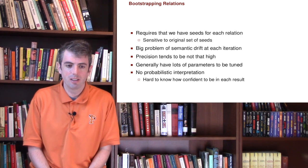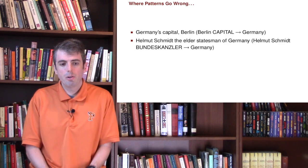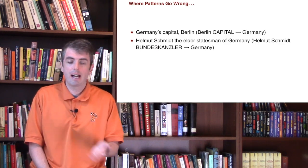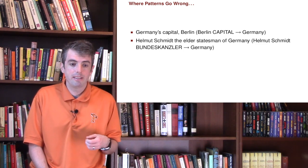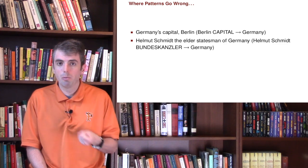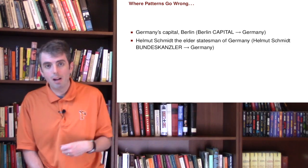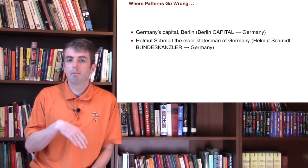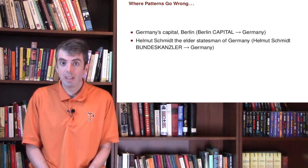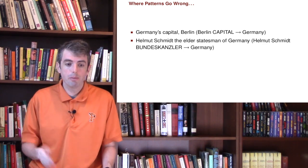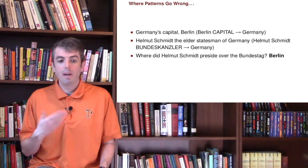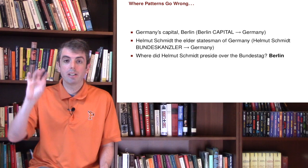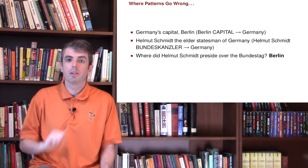So let's see an example of how this can go wrong. Let's say that we find something like 'Germany's capital Berlin.' We can say: whenever we see 'X's capital Y,' that means X is the capital of Y. And if we see things like 'X, the elder statesman of Y,' then we can know that X is the Bundeskanzler of Y — since we know for sure that Helmut Schmidt was the Bundeskanzler of Germany. Now we can answer questions like where did Helmut Schmidt preside over the Bundestag? We chain these two relations together, and we've answered a question.